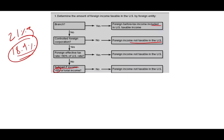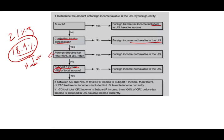We have to worry about them if they are a controlled foreign corporation operating in a tax haven, and the subchapter F income is more than 5% of their total income. If it's less than 5%, the US doesn't worry about this. If the subchapter F income is between 5% and 70% of total income, then we will tax them based on the proportionate share of subchapter F income. So if they earn 30% of their income as subchapter F income, we include 30% in the US. If more than 70% of their income is subchapter F income, then everything is included.